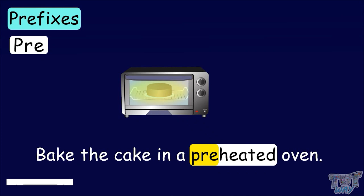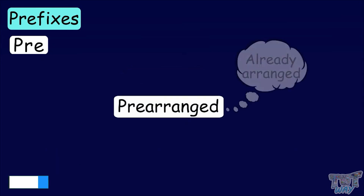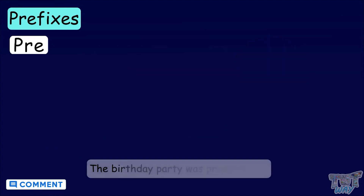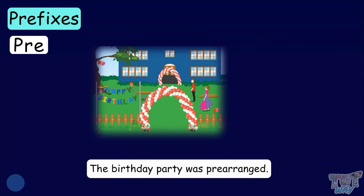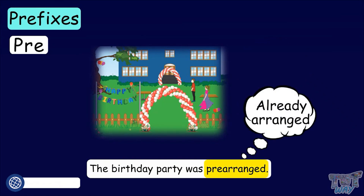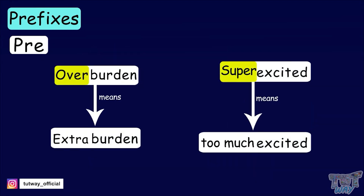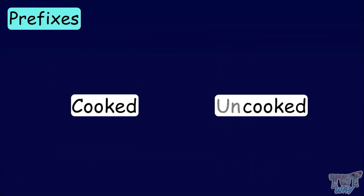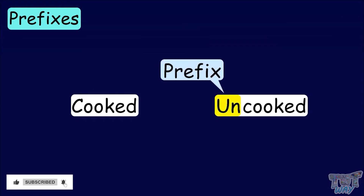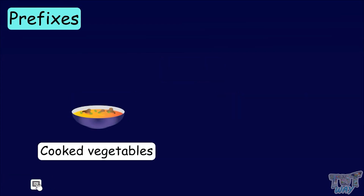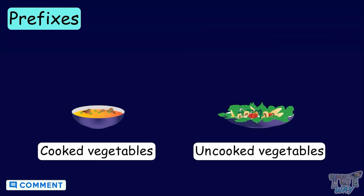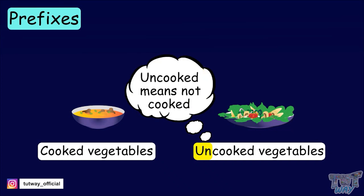Here we have more examples. Pre-arranged — it means already arranged. The birthday party was pre-arranged means it was already arranged. So the prefix changes the meaning of the word, and it is not an individual word. Cooked, uncooked — both words have different meanings. Uncooked has the prefix un and it means not cooked. We have cooked vegetables as well as uncooked vegetables as salads. Un made the meaning of cooked opposite — uncooked means not cooked.